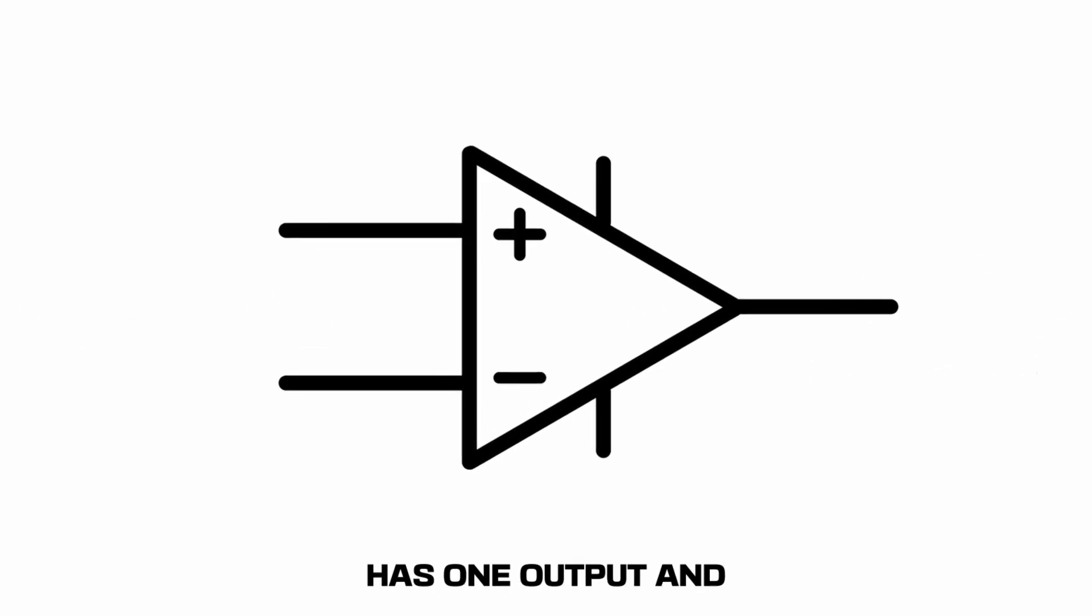An op-amp has one output and typically two inputs: a non-inverting input and an inverting input. There are also two power supply terminals that are essential for amplification. We can't just amplify a wave without some sort of power supply. There are many ways to power an op-amp.